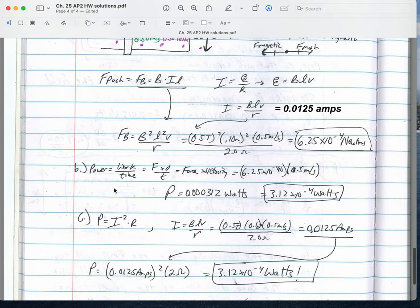The power is equal to work over time. Well, that's force times distance divided by time, so that's the same as force times velocity, since distance over time is velocity. We get 3.12 times 10 to the negative fourth watts.